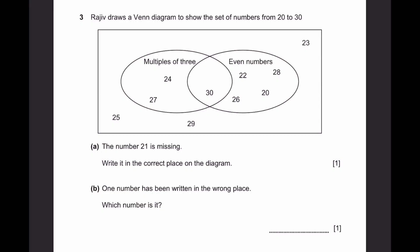Question 3. Rajiv draws a Venn diagram to show the set of numbers from 20 to 30. The number 21 is missing, write it in the correct place on the diagram. There is multiples of 3, even numbers, and none of them. 21 is not an even number, but it's a multiple of 3, which is 3 into 7, so 21 goes there.